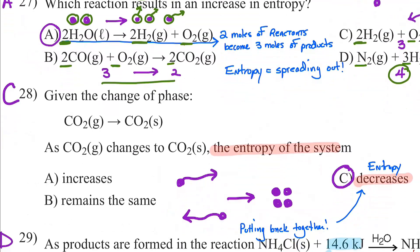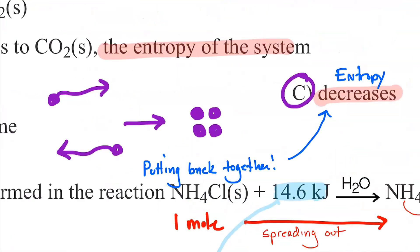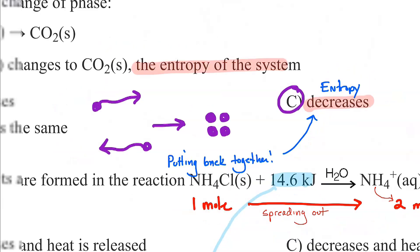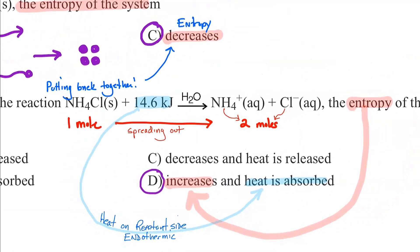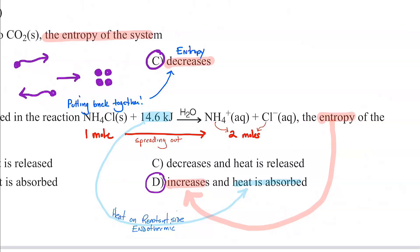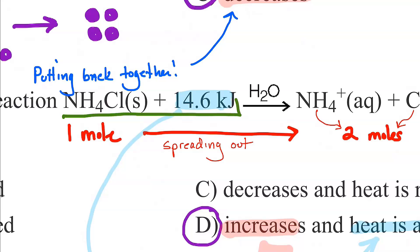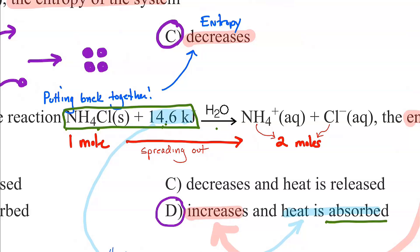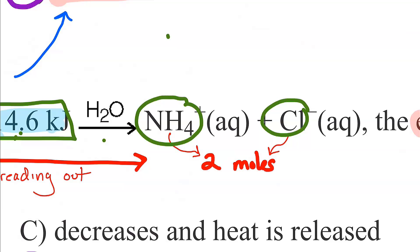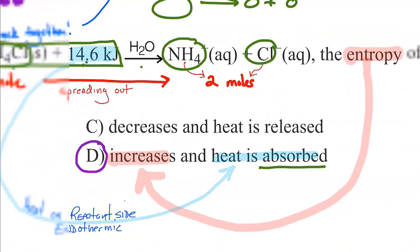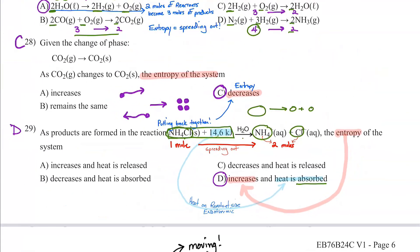Choice C shows a gas going to a solid — gases have a lot of freedom; solids wiggle in their fixed position. We're not spreading out; entropy is decreasing for C. For number twenty-nine: as products are formed in this reaction, the heat is on the reactant side in front of the arrow, meaning energy is going into the reaction — the reactants are absorbing it; it's endothermic. And for entropy: one formula here breaks apart into two pieces, so one thing decomposes into more pieces — we're spreading out, entropy is increasing. That's why 29 is D.